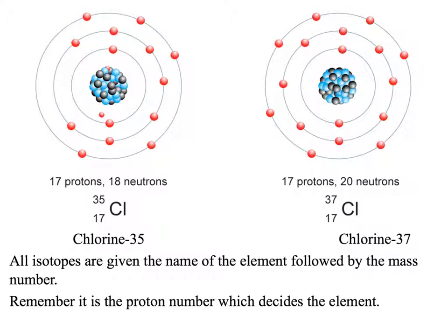Here is another example of an isotope. We've got chlorine-35 and chlorine-37. All isotopes are given the name of the element followed by their mass number. Chlorine-35 has a mass number of 35, chlorine-37 has a mass number of 37. Notice again, the atomic number or proton number is the same. If we change that, we won't have chlorine anymore. Remember, it's the proton number that decides which element it is.